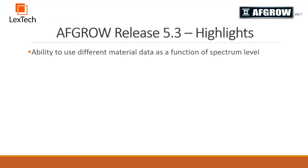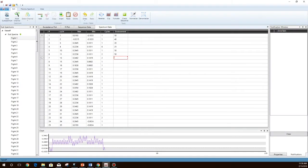Also new to the 5.3 release is the ability to use different material data as a function of spectrum level. I will go over how to create a spectrum with the environment tags in a later video but for now here is an example of how one should look. As you can see you can enter temperatures for each level in a spectrum.